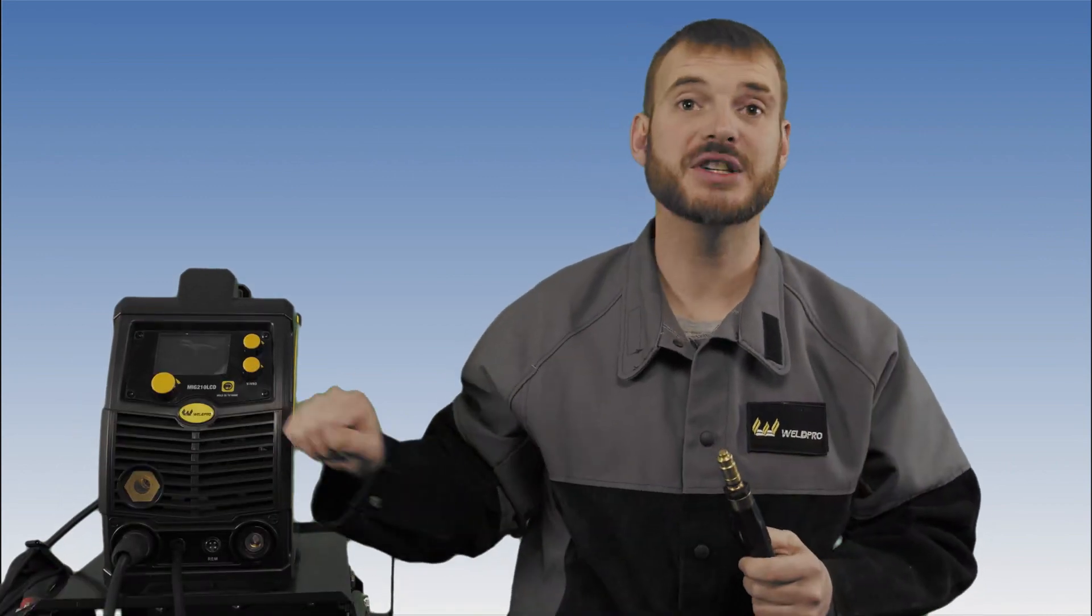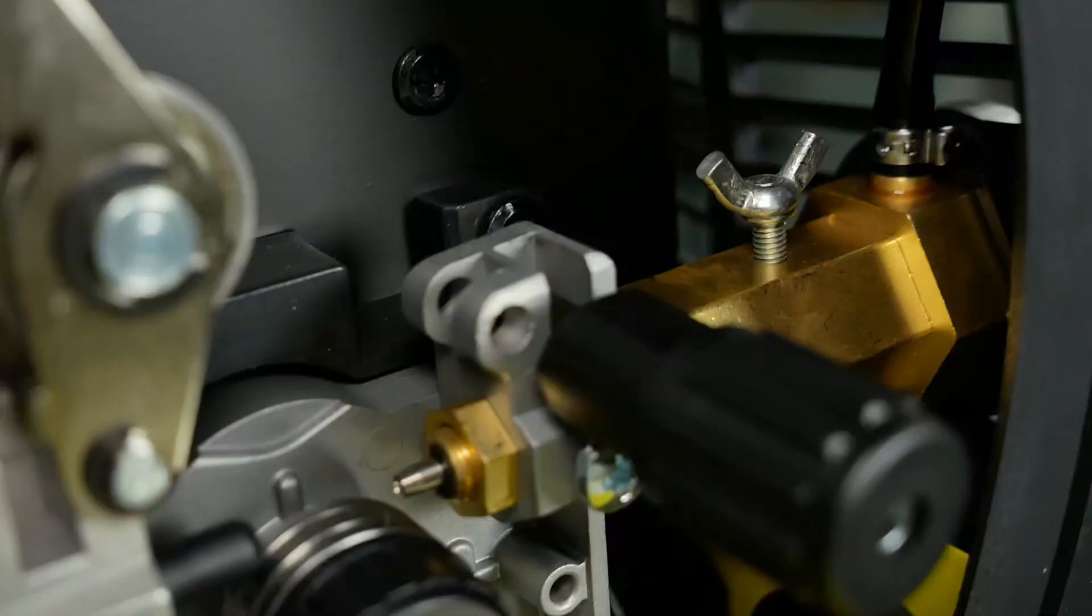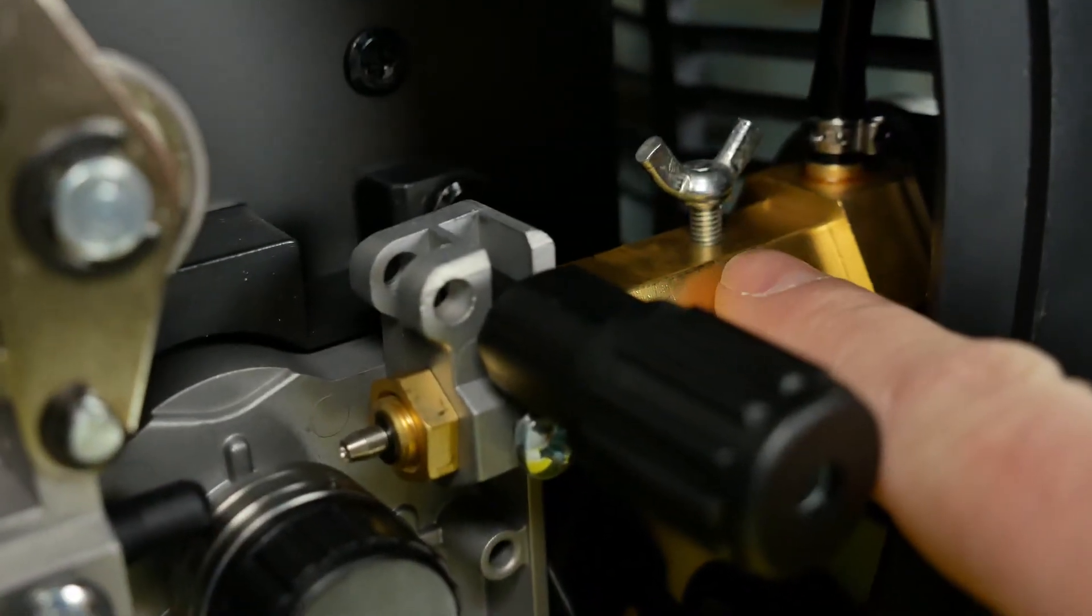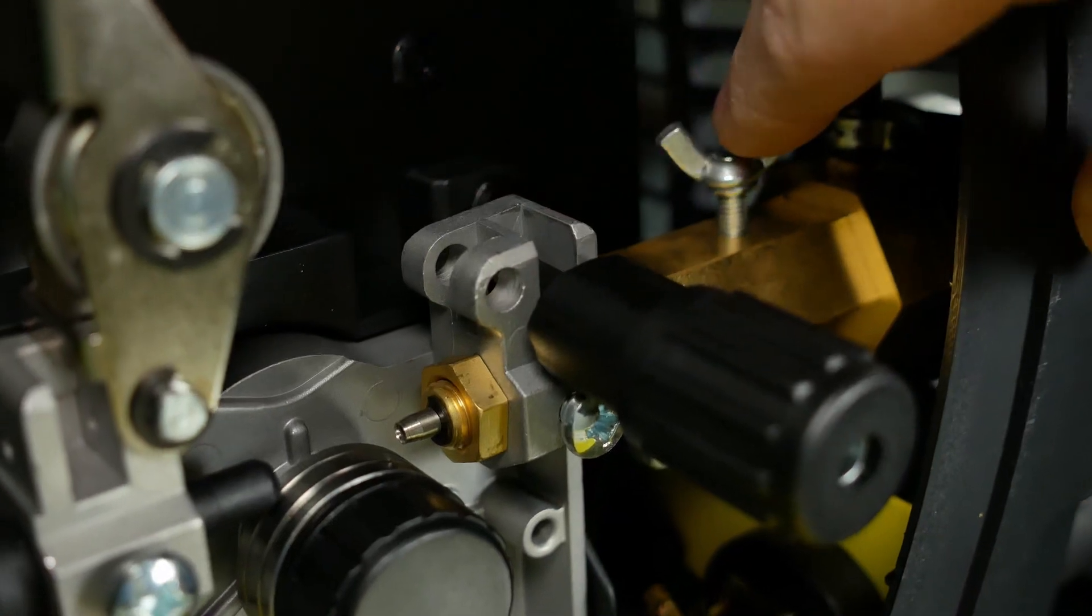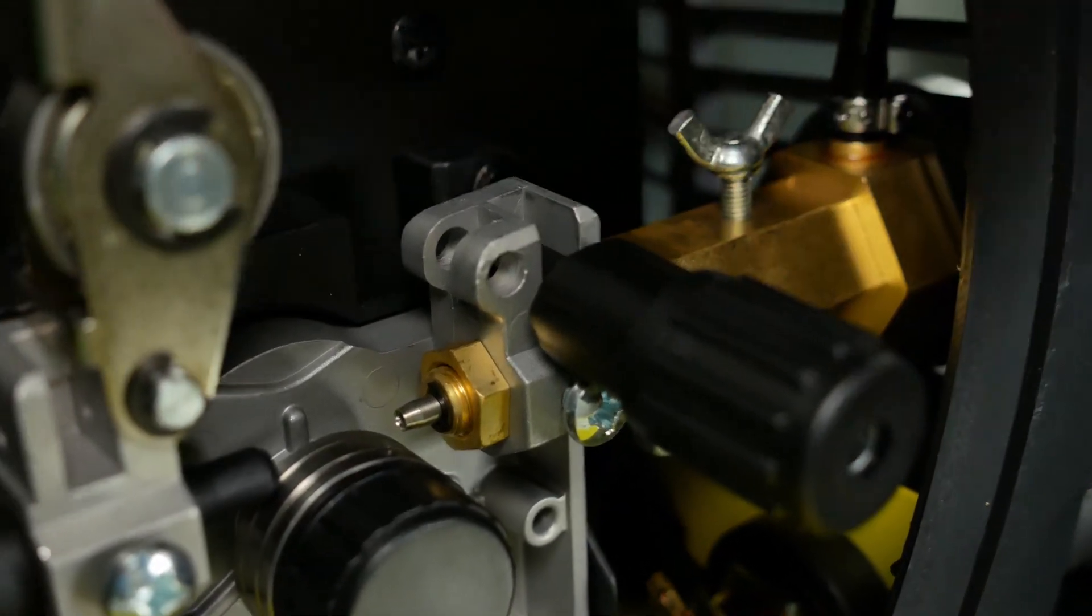Before we can install a MiG gun or a spool gun on the front of the MiG-210 LCD, we need to open up the side and loosen up the small wing bolt that's in by the wire drive assembly. Doing this will allow this sleeve to slide freely into the front of the machine.